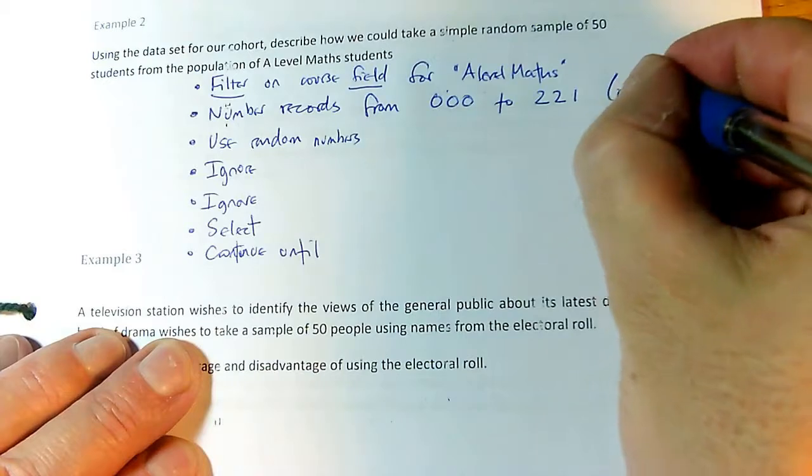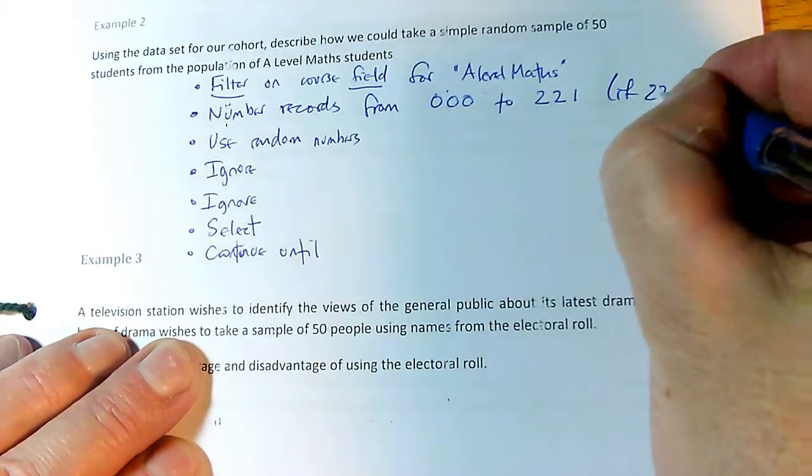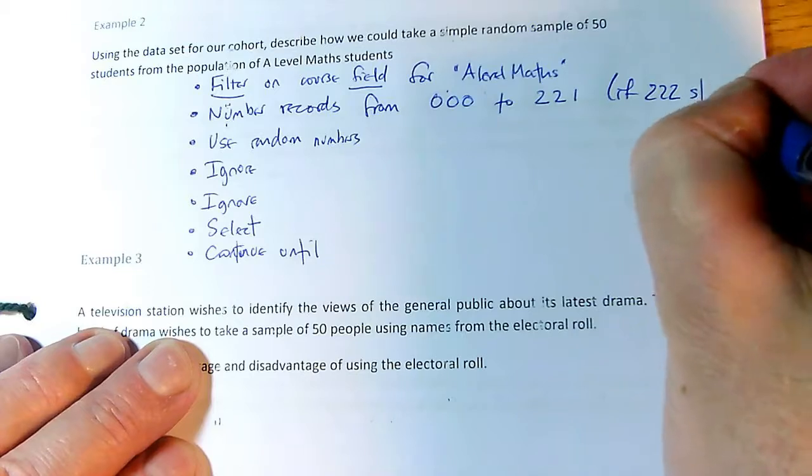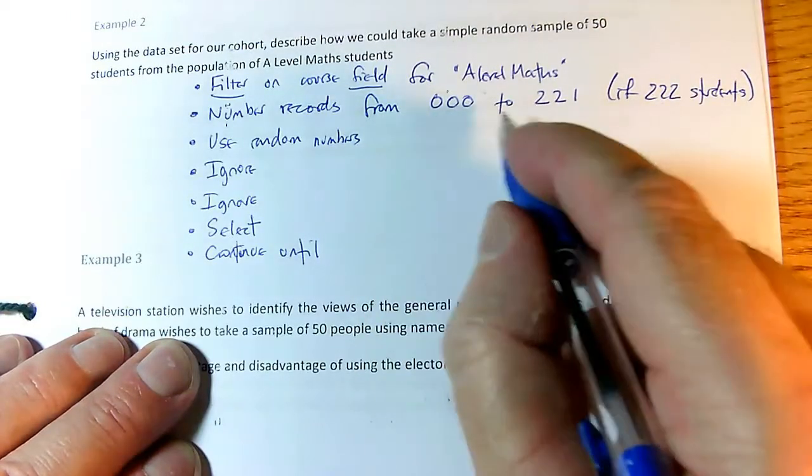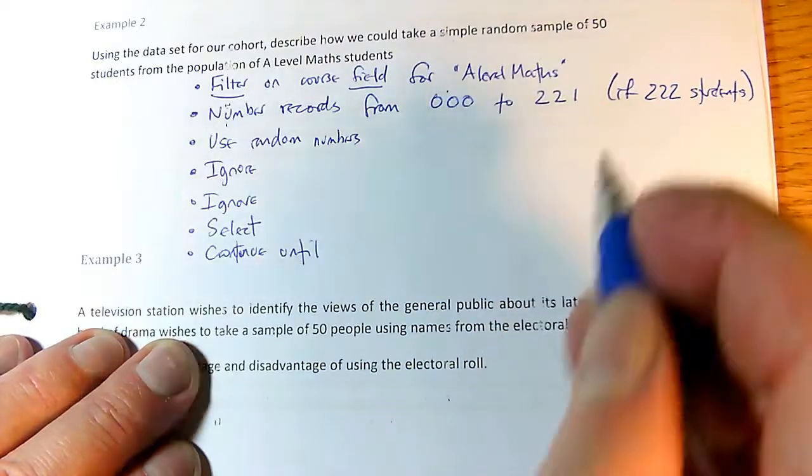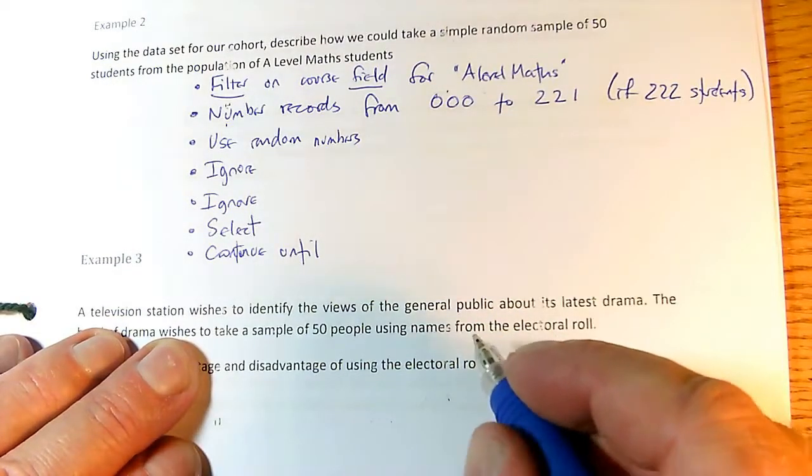This will be if there are 222 students. Watch out for that. If you are starting numbering from 0, then the top number will always be one less than the number of students you've got.